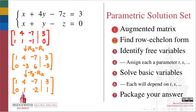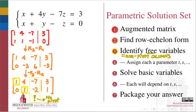Using this row echelon form, identify which of your variables are free variables. These will be the variables corresponding to the columns that do not have pivots in your row echelon form. The columns that have pivots will correspond to the basic variables.